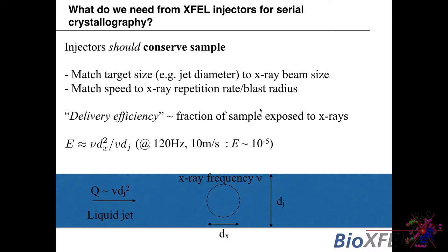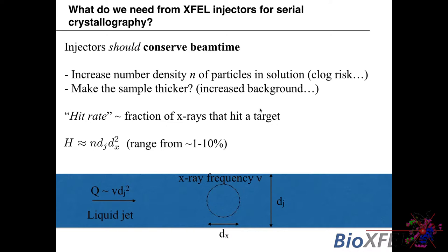The injector also needs to conserve sample. We need to roughly match the injector size to the x-ray beam size, and match the injection speed to the blast radius and pulse repetition rate. A critical parameter is delivery efficiency — geometrically, it's the fraction of sample exposed to x-rays. For a liquid jet moving at 10 meters per second at LCLS (120 Hz) with a micro-focused beam, the delivery efficiency is roughly 10^-5, which is startling. One approach is to slow it down, as the LCP injector does, though at higher rep rates that speed may be needed.